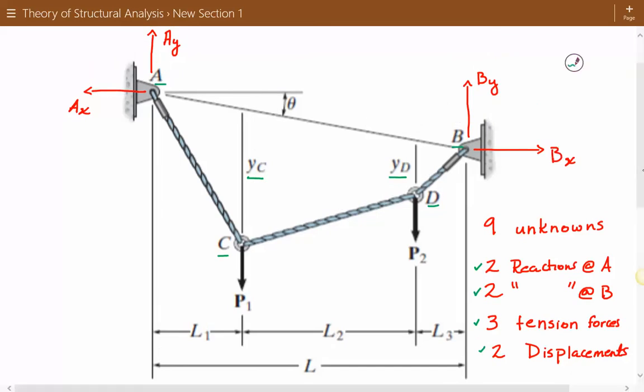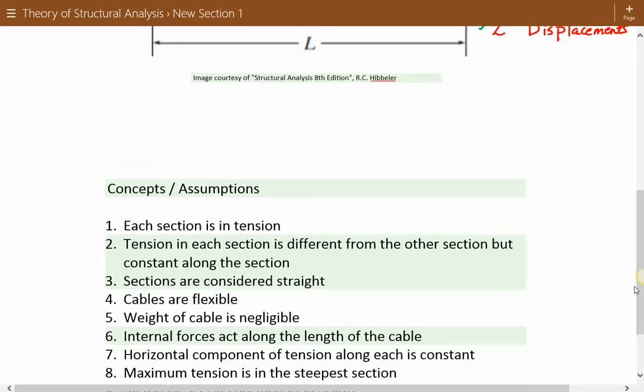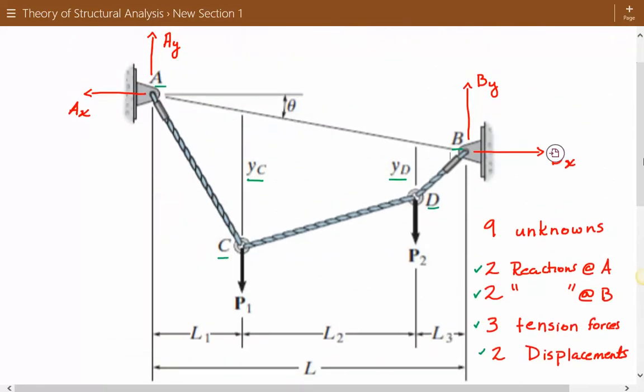If we look at our figure, the steepest section is AC, so that means it will have the highest vertical component of tension. That leads us to our eighth point, which is that the maximum tension is in the steepest section. The vertical component of tension is dependent upon the steepness of the section. The steeper it is, the greater the vertical component of tension.